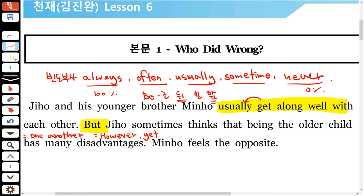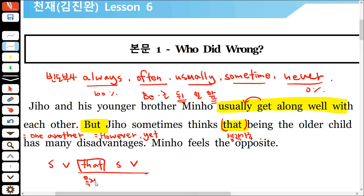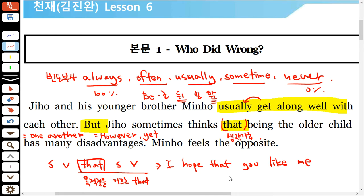yet은 '아직'이라는 뜻도 있지만 '그러나, 하지만'이라는 뜻도 있어요. that절은 목적절을 이끄는 접속사인데 생략 가능해요. 예를 들어 'I hope that you like me'에서 that을 생략할 수 있어요. 문장 전체를 봤을 때 본주어는 I, 동사는 hope, that절 전체가 목적절이 되는 구조예요.